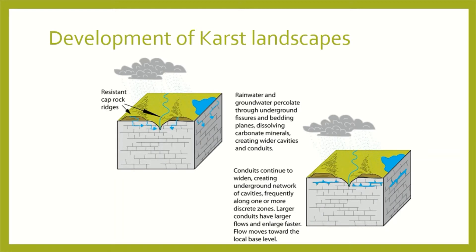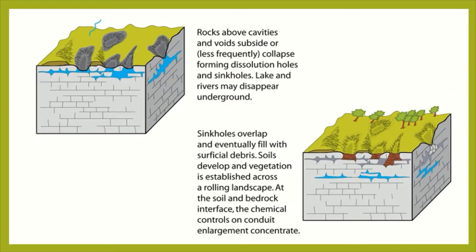Here are pictures showing the development of karst landscapes. Rainwater passes through fractures in bedding planes, dissolving carbonate minerals and creating wider cavities and conduits, which continue to grow and widen. Then rocks above cavities collapse, forming dissolution holes and sinkholes. Those sinkholes overlap and eventually fill with surficial debris. Soil develops and vegetation is established.